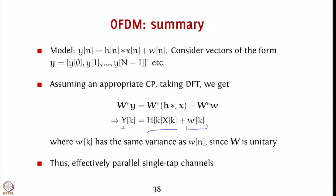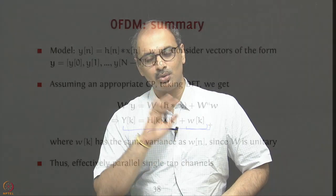Therefore, this is effectively a very plain single-tap scaling plus additive white Gaussian noise channel, which is very easy and simple to handle. You can now bring back all the tools you learned, greatly simplified because you just have a single tap — not a filter. Your OFDM has converted this convolution filter channel into a simple multiplicative channel. Of course, there are some costs like the cyclic prefix overhead, but it is very easy to implement a receiver for this when you look at the trade-offs.